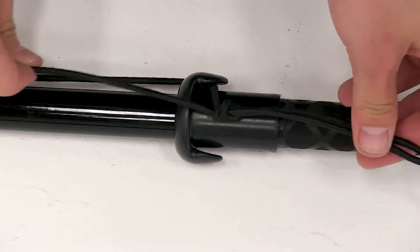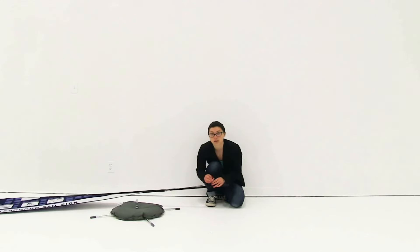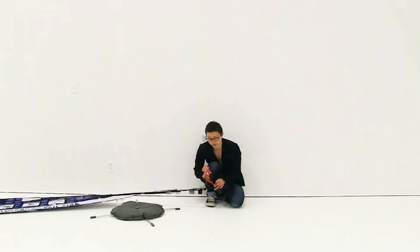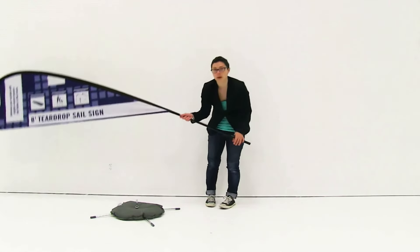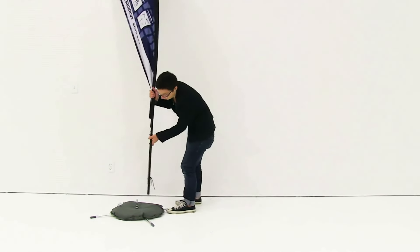If you have extra elastic after you've tied the knot, what you can do is tie a second knot or you can use scissors to trim it. Once I have my graphic taut, I'm just going to insert the pole onto the base.